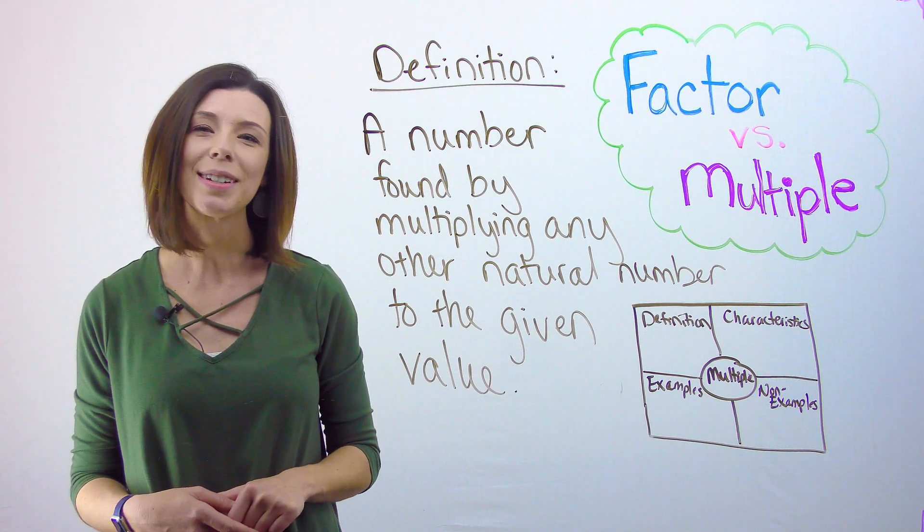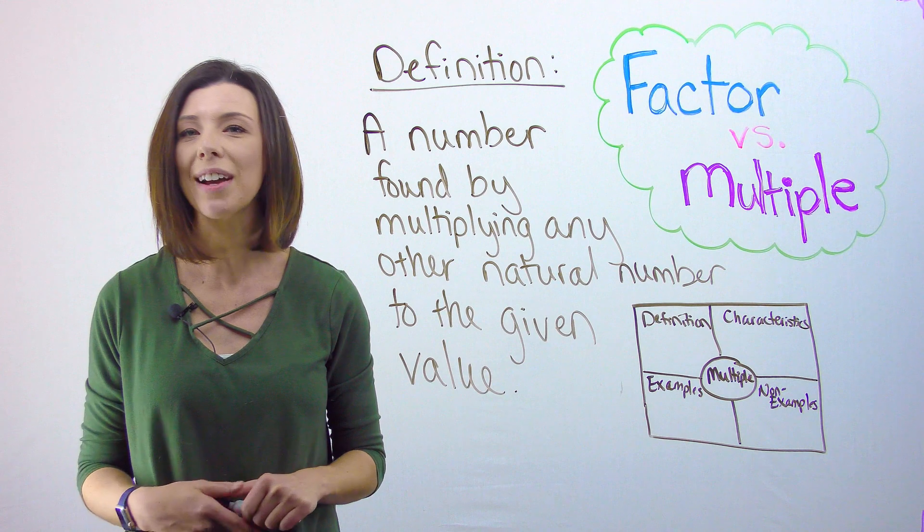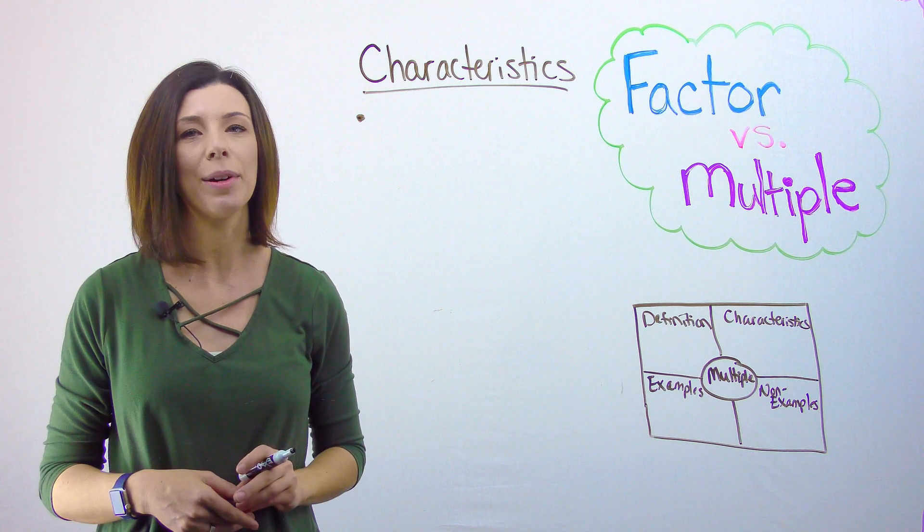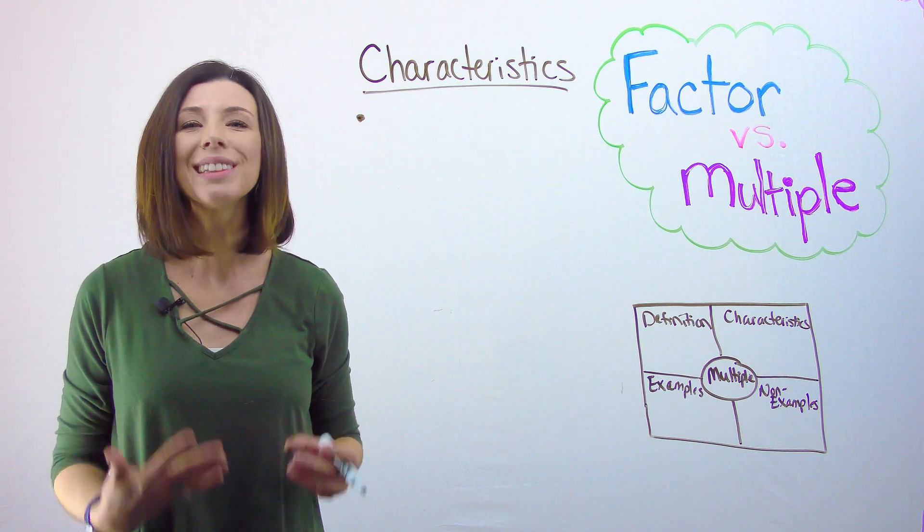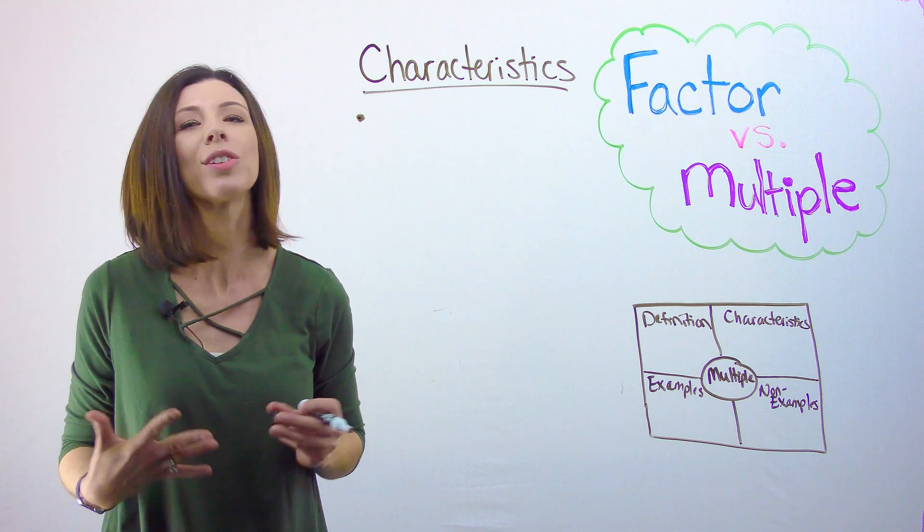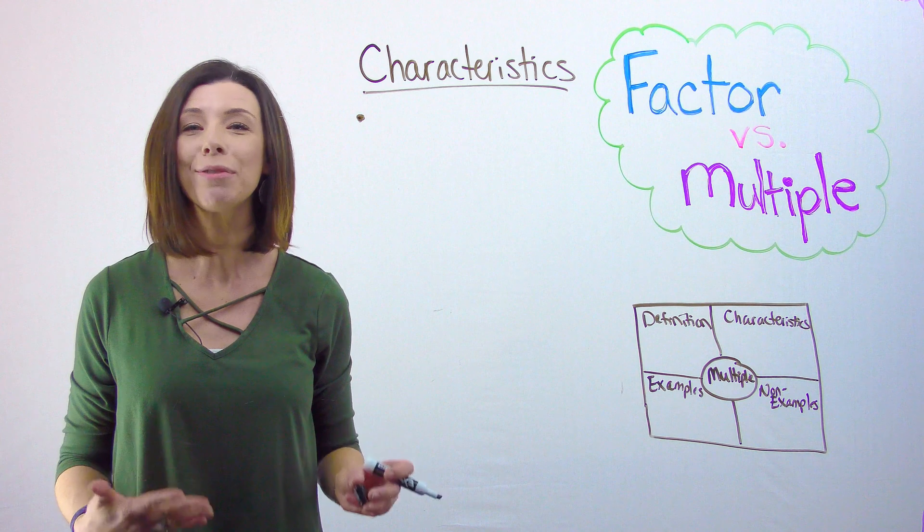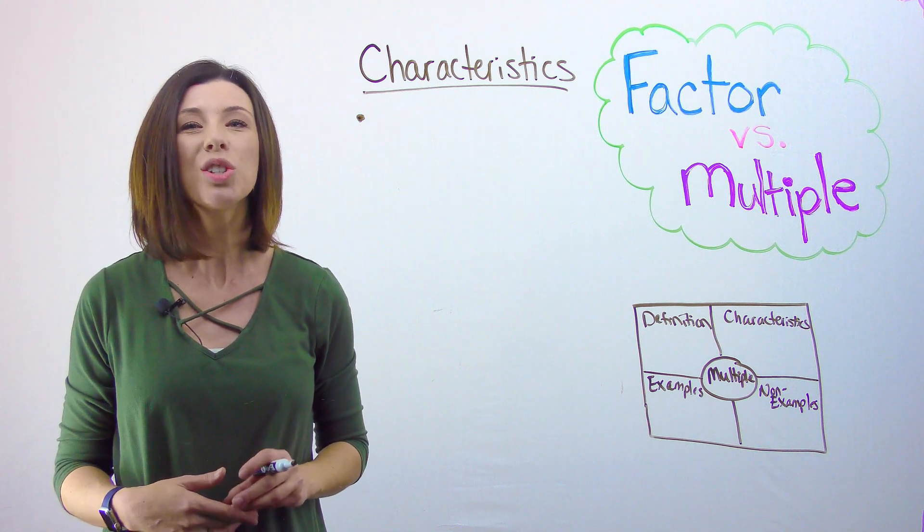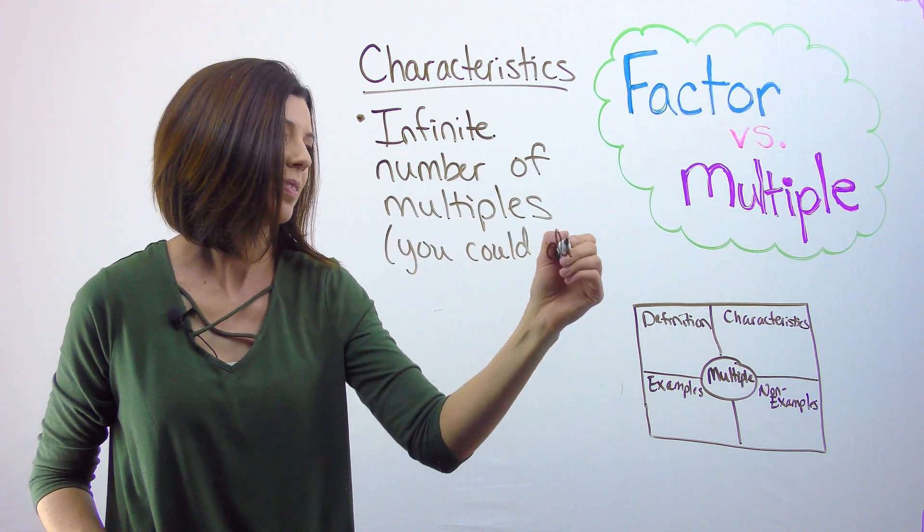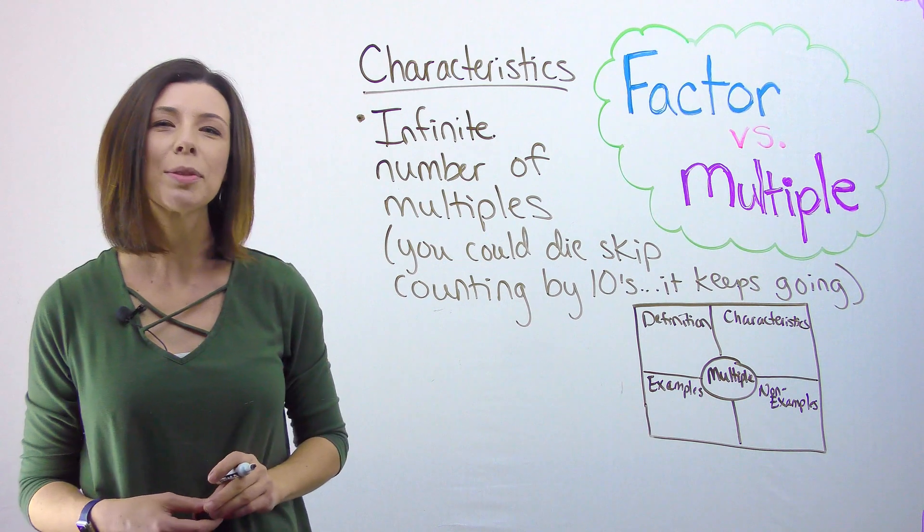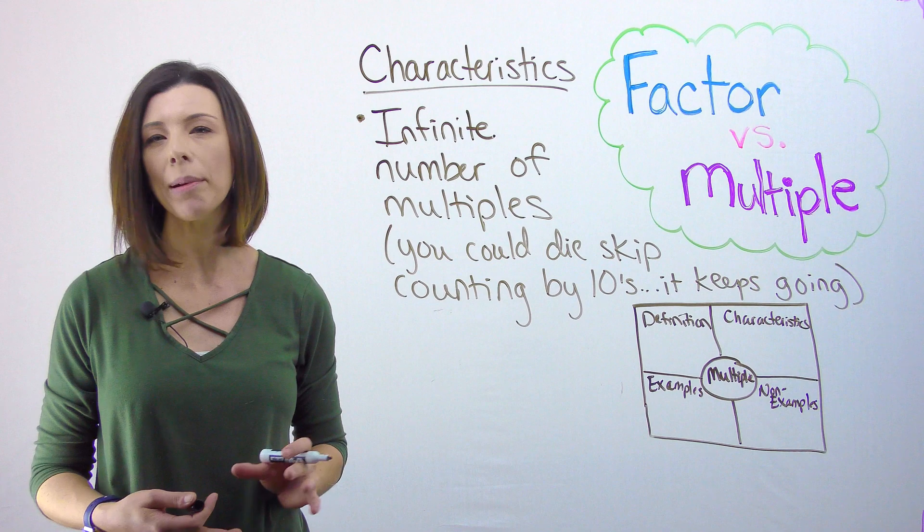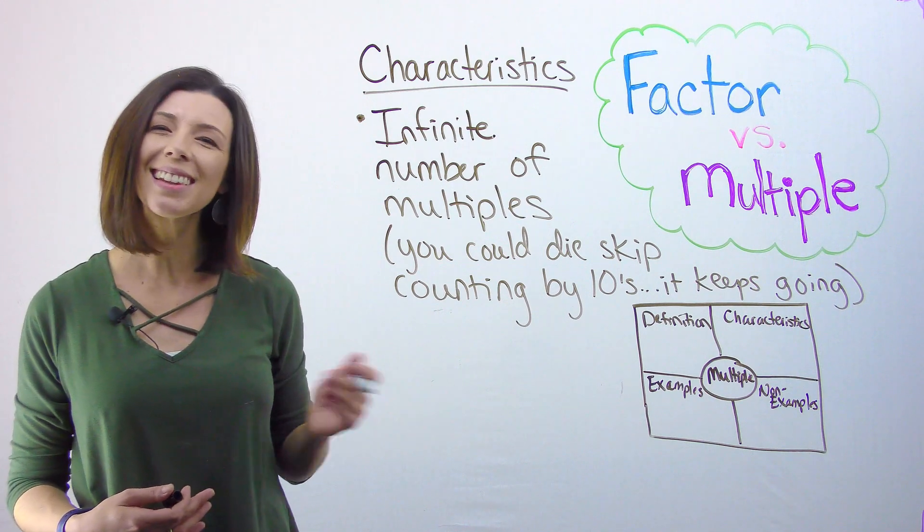Lastly, let's talk about the characteristics of multiples because these are different than factors. One major characteristic about multiples is that there's an infinite number of them. Meaning you could literally die, skip counting by tens forever. You could keep on going. Your life would end. You would not have reached the end of the positive numbers. So there's an infinite number of multiples. One other thing about multiples that's kind of interesting is that they always have to be greater than or equal to the number. In other words, you'll never get a multiple of 10 that's less than 10.